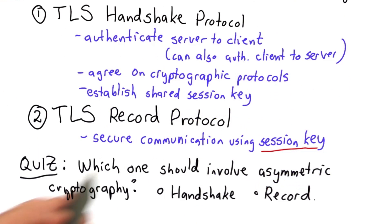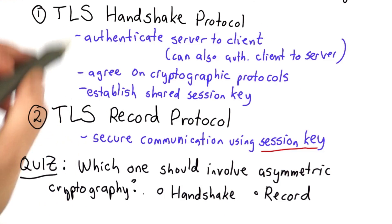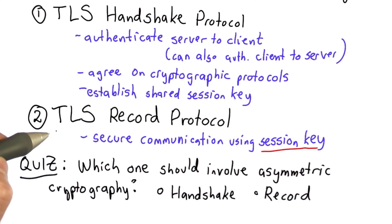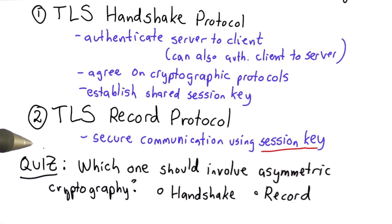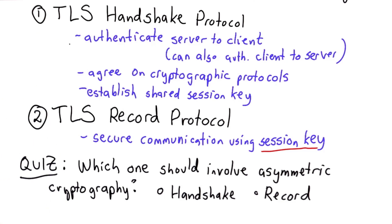The question for this quiz is: which one of these two protocols is likely to involve asymmetric cryptography? I haven't described the protocols in detail yet, but based on what they do, you should be able to figure out which one is likely to use asymmetric cryptography.